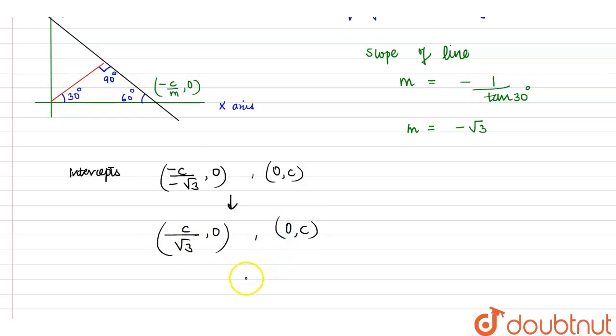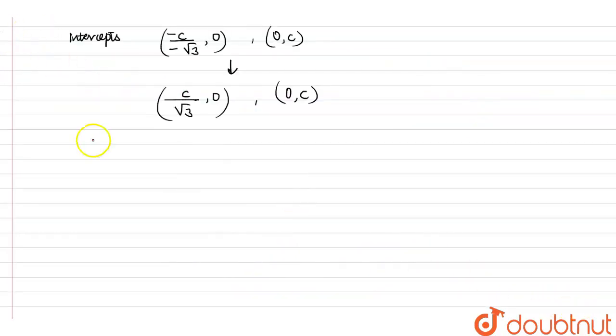Now, we can say that the area of the triangle is half into base into height. This will be equal to half into c upon root 3 into c. We are given that area of triangle is 50 upon root 3.